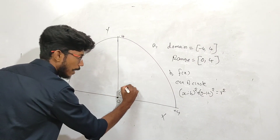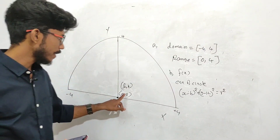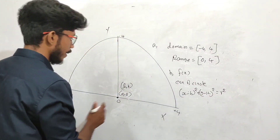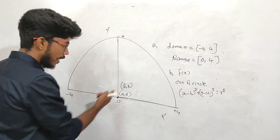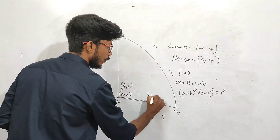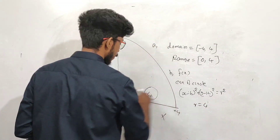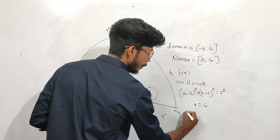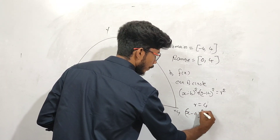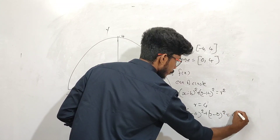The circle center is (0, 0). R is equal to 0 — that is, the radius. The distance of the radius is 4 units. R is equal to 4. H is equal to 0, 0. So x minus 0 whole square plus y minus 0 whole square equals 4 square.